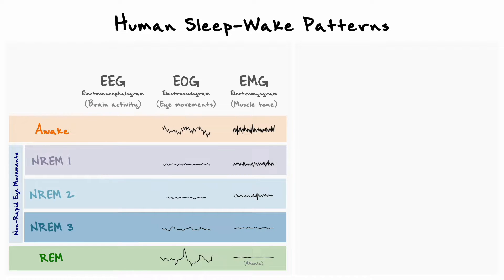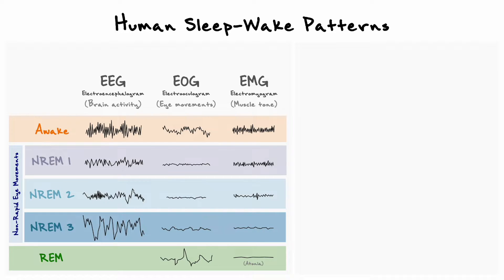Lastly, for brain activity, EEG recordings can be a bit more complex to understand, but for the purpose of this video, the idea is that when one progresses from the wake to the non-REM 3 stage, the activity of the brain becomes slower and more synchronized. But during REM sleep, brain activity is faster and somewhat similar to what is seen during the awake stages. As a quick last detail, REM sleep is typically associated with dreams, and that will be relevant later when we discuss narcolepsy.